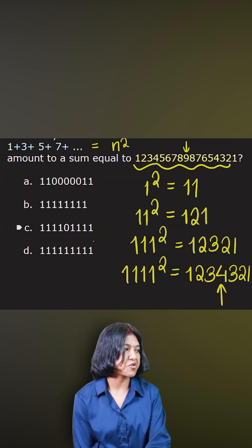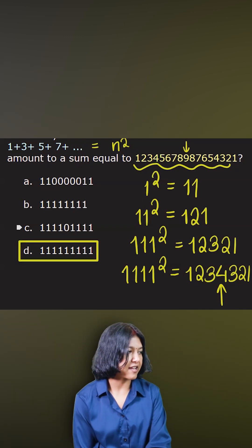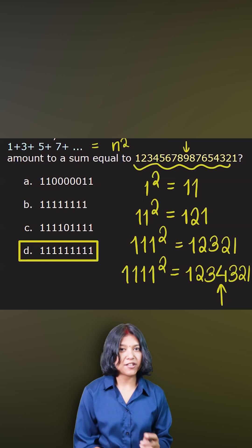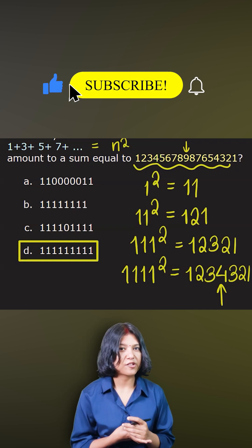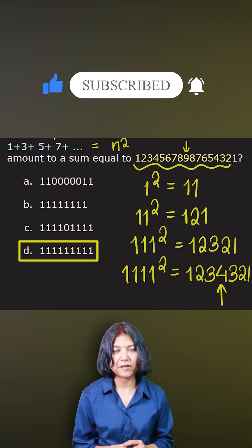So therefore, the answer has to be option D where there are exactly nine ones. So these are the two important properties I used solving this question. I hope it made sense.